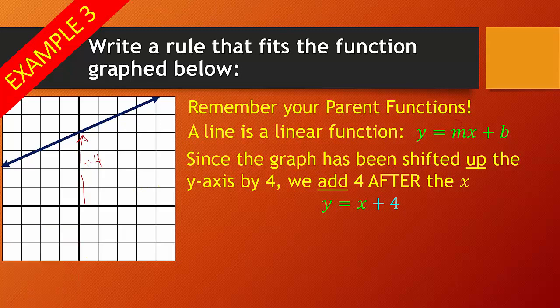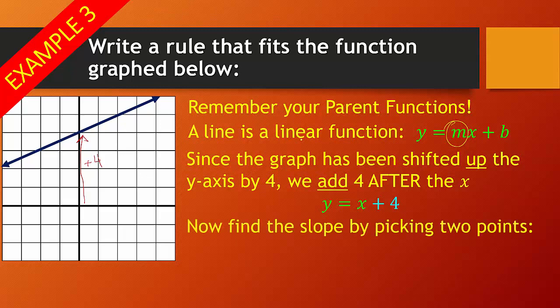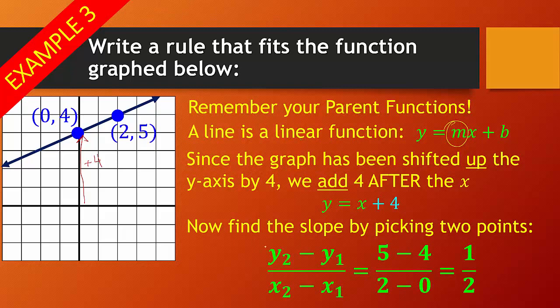Easiest way to do that, find two points. So I chose the one right on the y-intercept, and then another one, which is 0, 4, and 2, 5, so you need to be able to find those points on there, and then set it up. Now, I wrote this a little bit different, just because you might be more familiar with this. So y2 minus y1, so I took my y values. I started with a 5 minus 4, so since I started with 5, I have to start with 2, and then 2 minus 0.